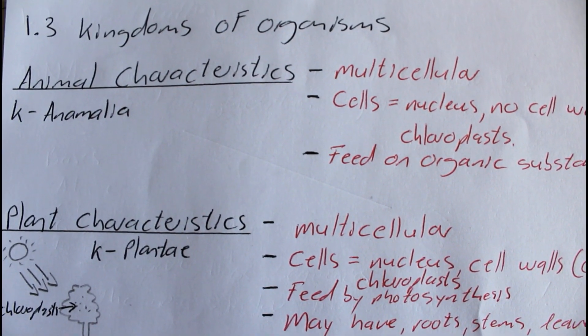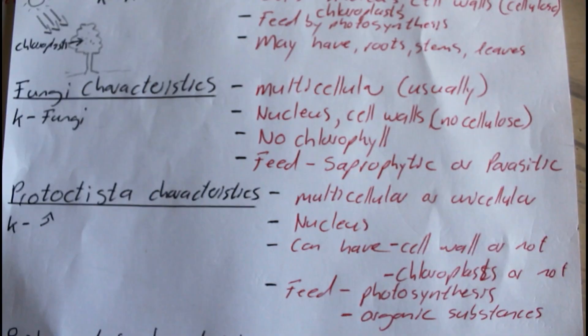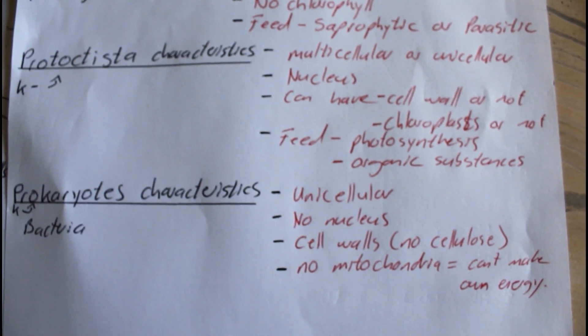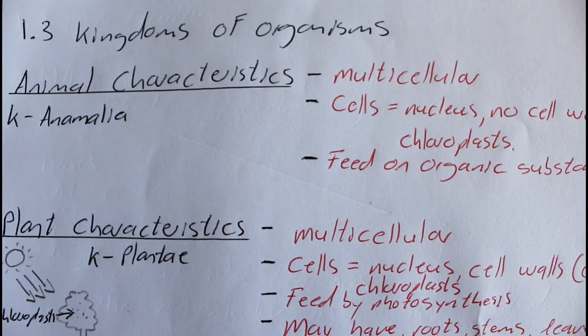To summarize the rules: underline the name, capitalize the genus, and use lowercase for the species. Now we're going to look at the five kingdoms of organisms: kingdom Animalia, kingdom Plantae, kingdom Fungi, kingdom Protoctista, and kingdom Prokaryotes. Go and study these kingdoms and their characteristics — I suggest making a summary because you have to know them.